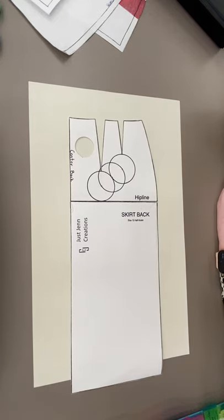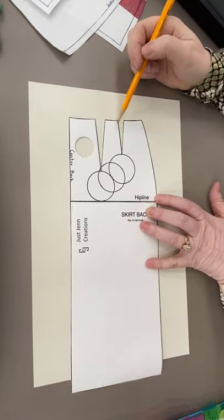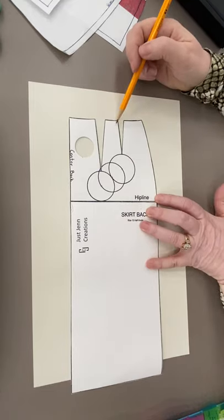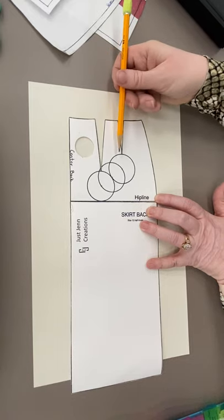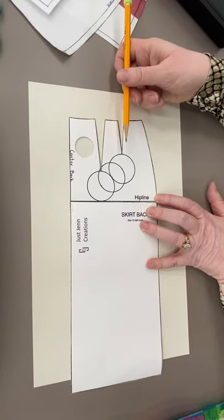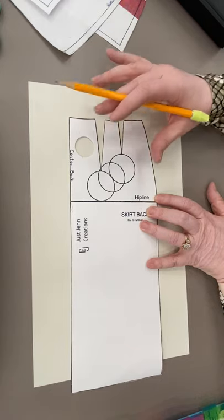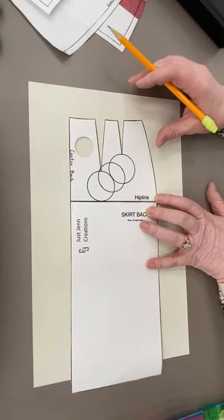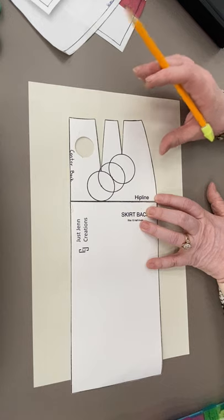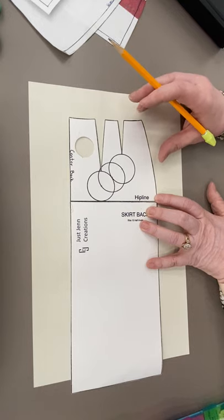Okay, number two, we're going to be doing the same thing. We're still combining a dart. We are not making a French dart, though. We're just going to combine two darts into one central location dart, and we're going to use the pivot method, not the slash method. This means we're combining the darts and tracing the sloper at the same time, so don't trace the whole sloper yet.